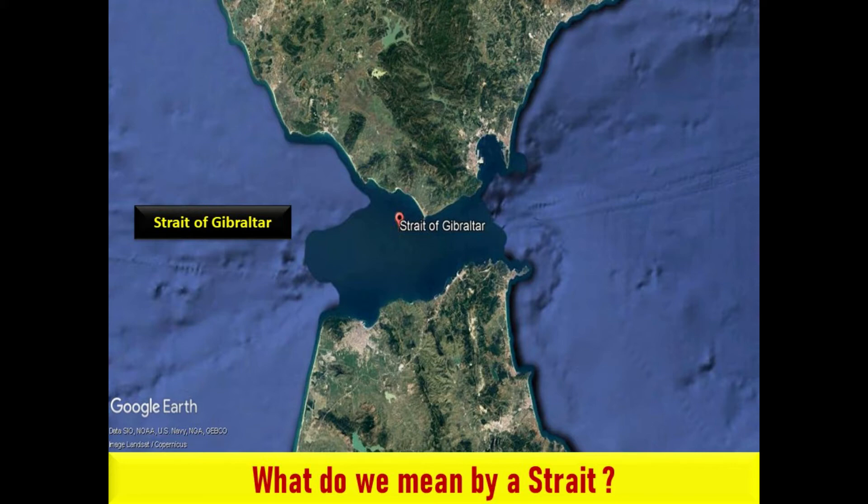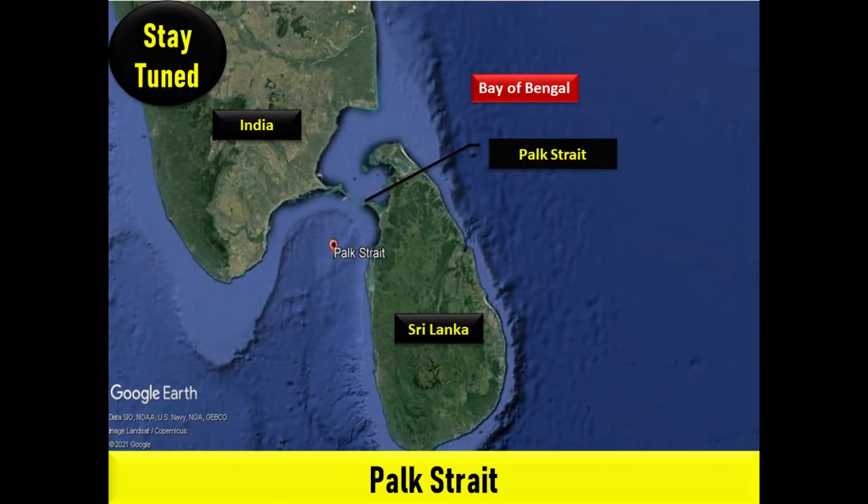Now let's discuss each major strait of the world in detail with the help of Google Earth. The Palk Strait connects the Bay of Bengal with the Gulf of Mannar. It is a strait between the Tamil Nadu state of India and the Jaffna district of the northern province of the island nation of Sri Lanka. It connects the Bay of Bengal in the northeast with Palk Bay in the southwest. The strait is named after Robert Palk, who was a governor of Madras from 1755 to 1763, during the Company Raj period.